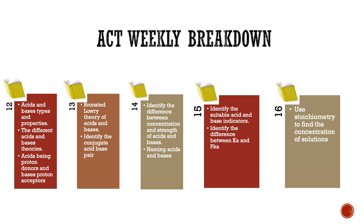On November 12th we will be going over acid and base types and properties. We will identify the different acids and base theories, going over the Arrhenius theory and the Bronsted-Lowry theory and their key differences. We will cover acids being proton donors and bases being proton acceptors for the Bronsted-Lowry theory, and identify acids as proton donors and bases as hydroxide ion donors for the Arrhenius theory.